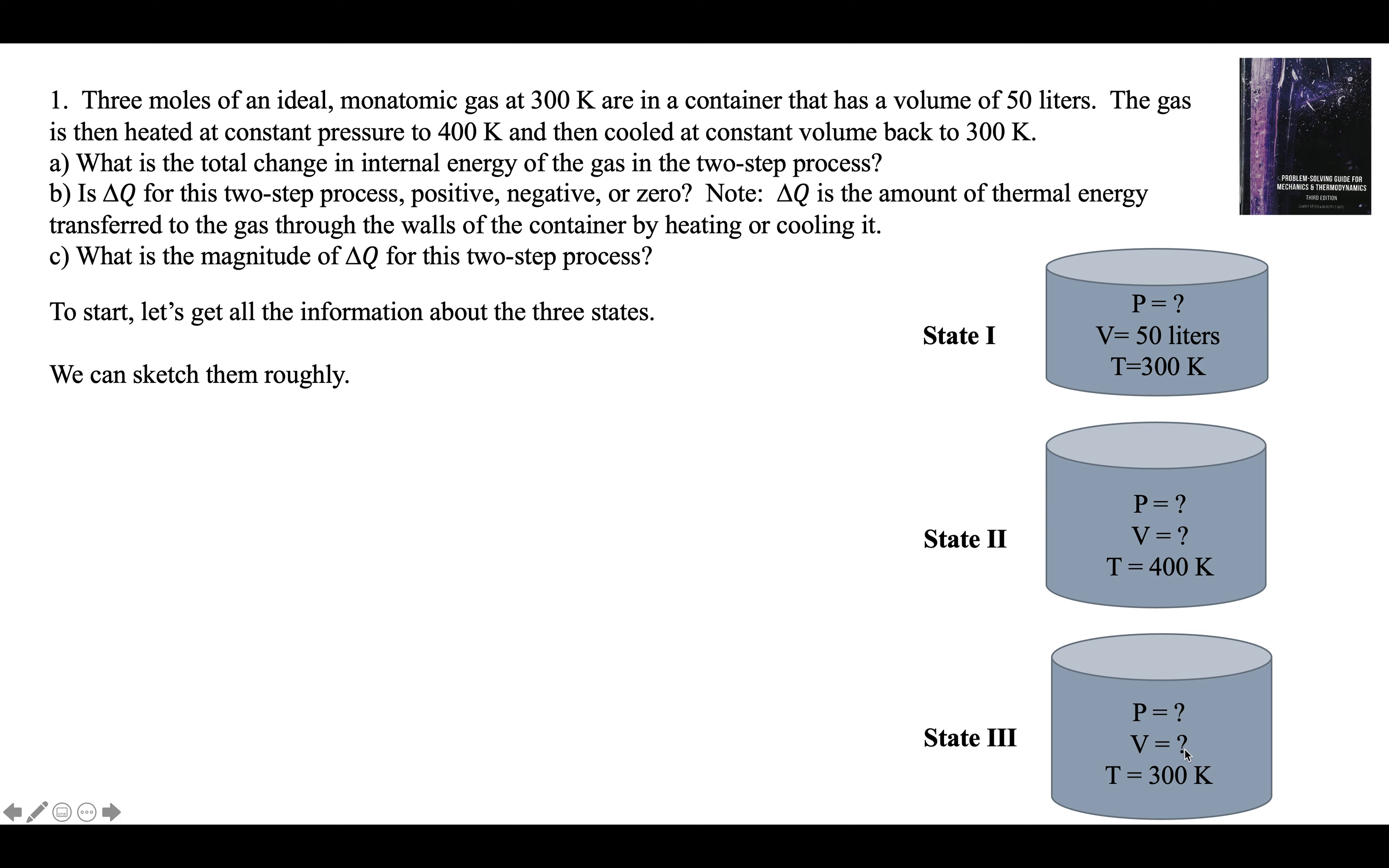So here's where we stand. State one, the initial state. State two, intermediate state, 400 kelvins. State three, the final state, back to 300 kelvins. The initial state, we know we have three moles at 300 kelvins, and a volume of 50 liters. We can use the ideal gas law to get the pressure.